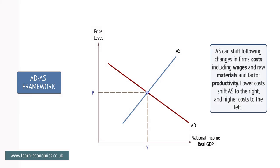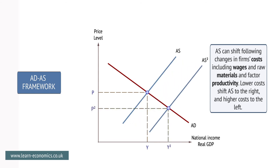Shifts in aggregate supply, AS, can affect the equilibrium level of output in an economy. AS can shift following changes in firms' costs, including wages and raw materials and factor productivity. Lower costs shift AS to the right, and higher costs shift AS to the left.